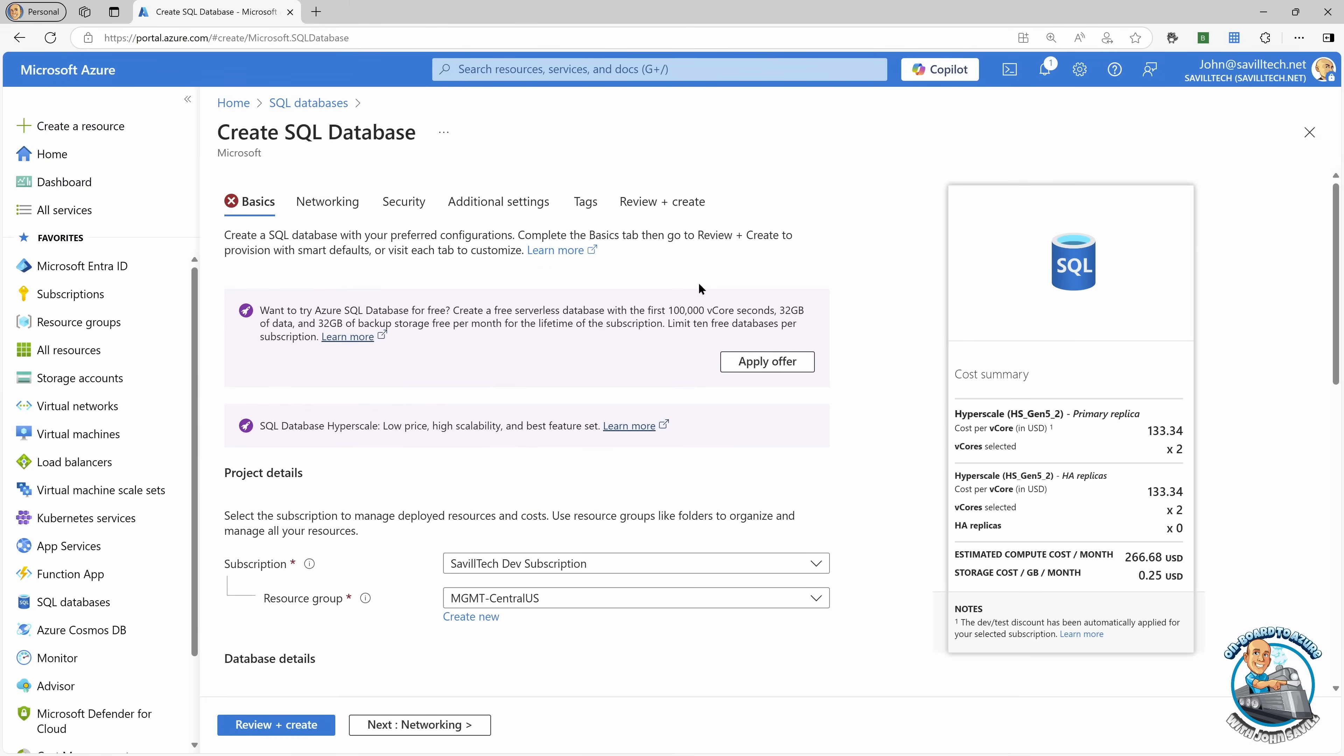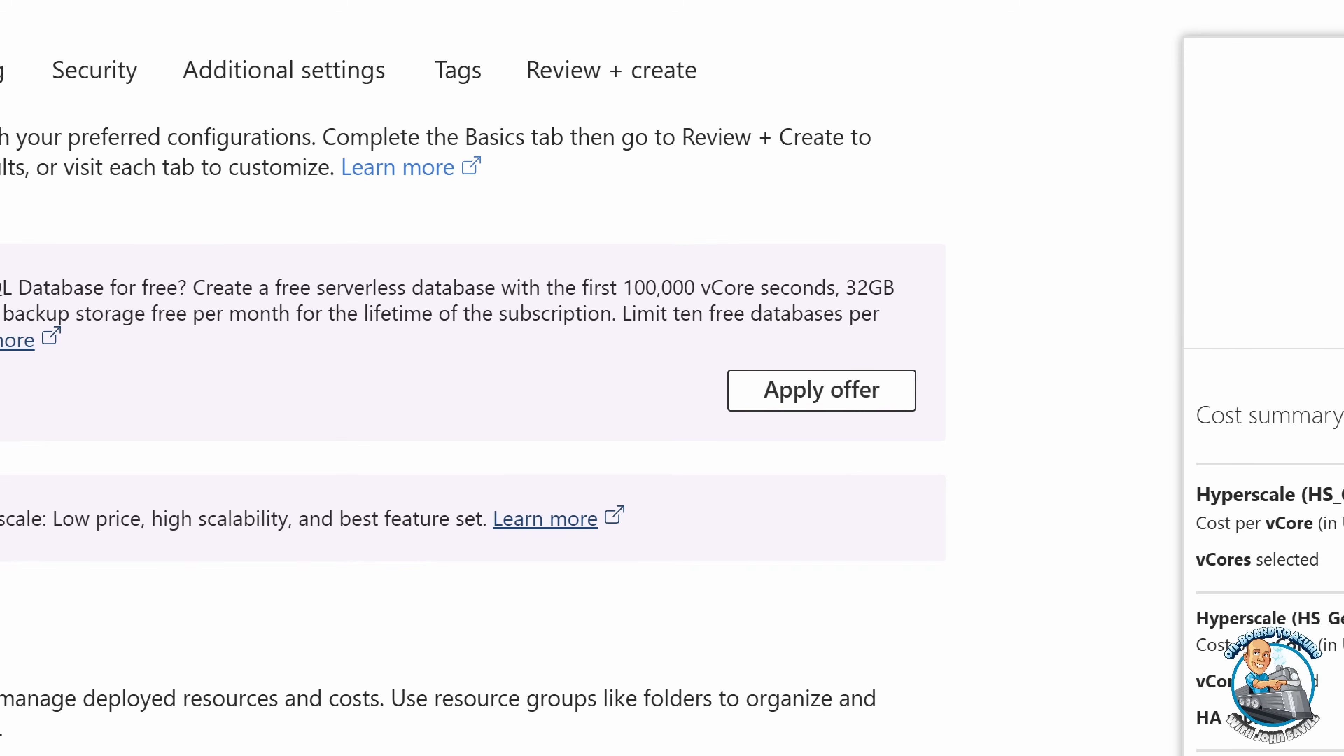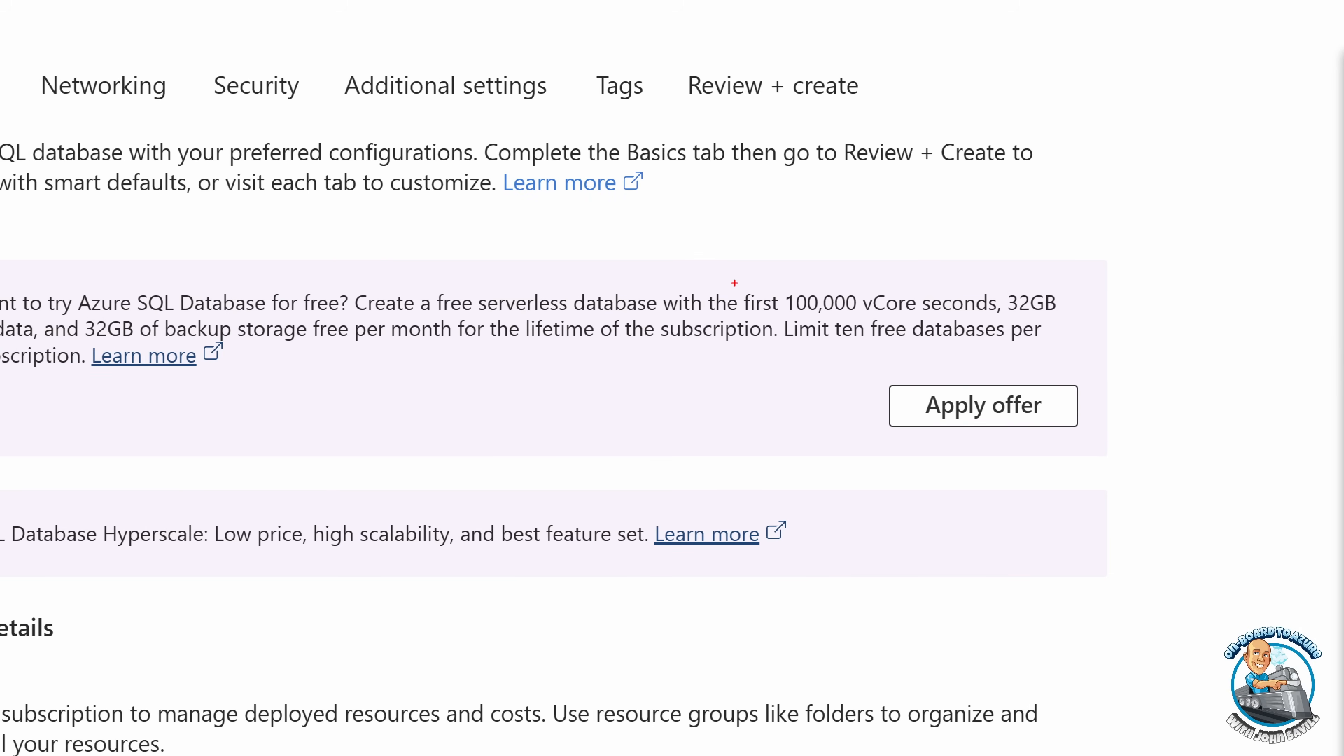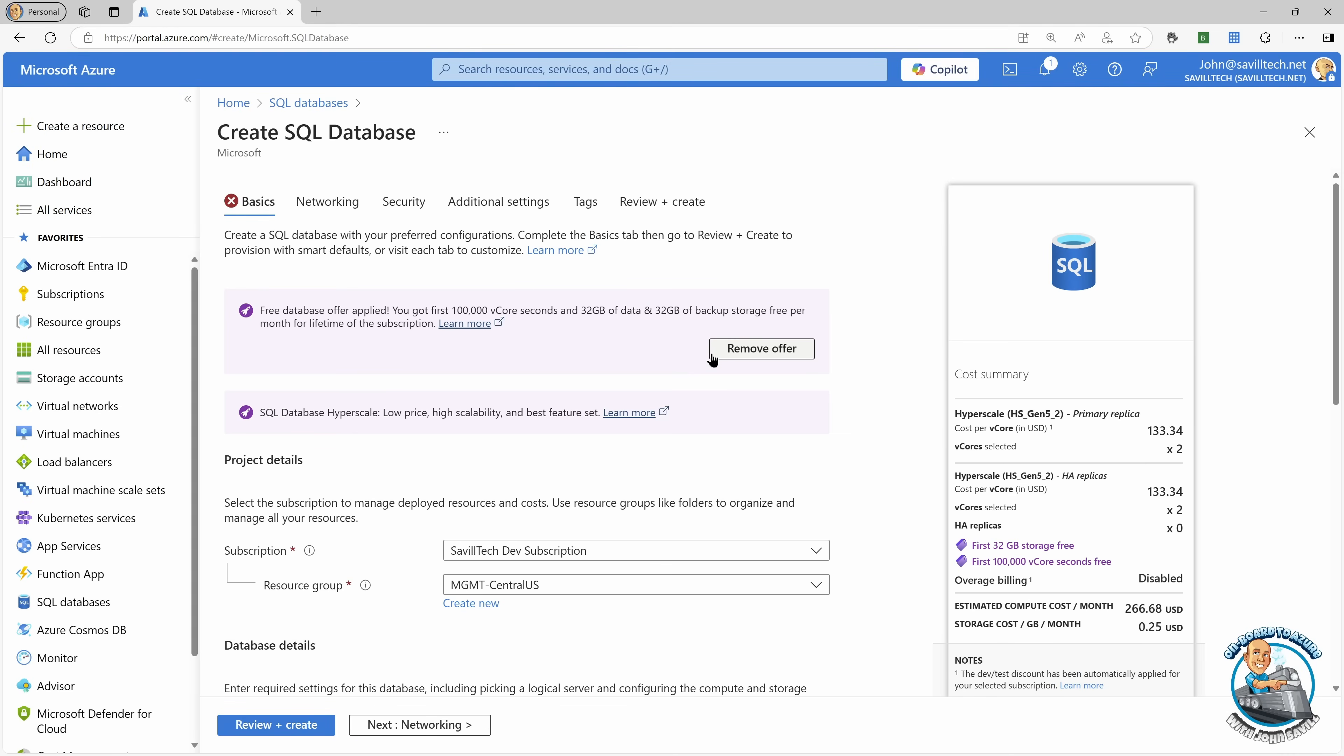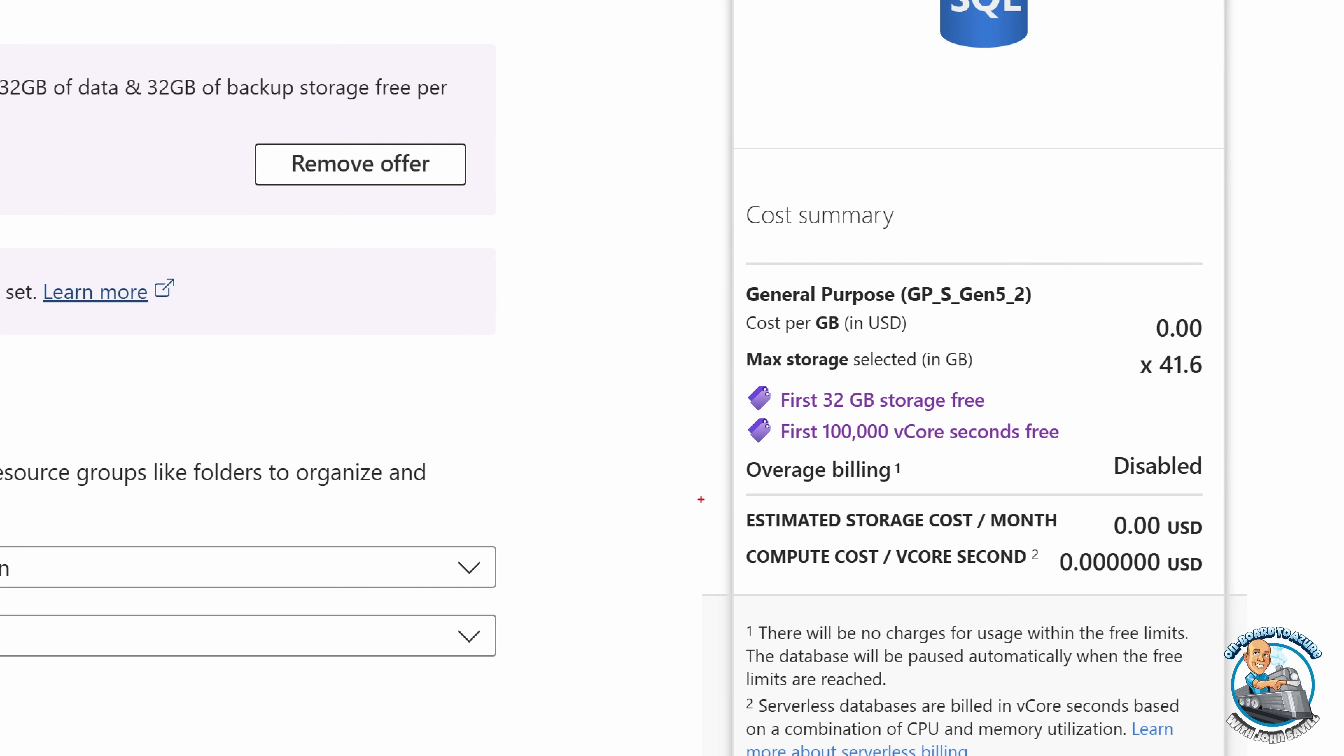I can see I'm creating a database. And we get the option to the first 100,000 vCore seconds, and that's 32 gigabytes of storage, and I can apply the offer. Now, when I apply the offer, what we'll see is, well, the pricing all goes to zero.